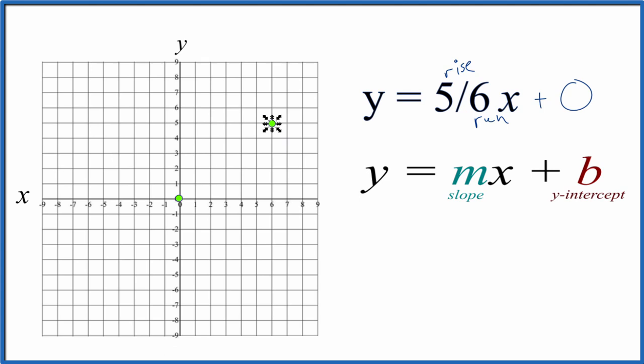So we have our points there. We could go up 5 and over 6 again, but we're going to be off our graph. So let's go in the opposite direction. Let's go down 5 and then over to the left 6, and there we have our third point.